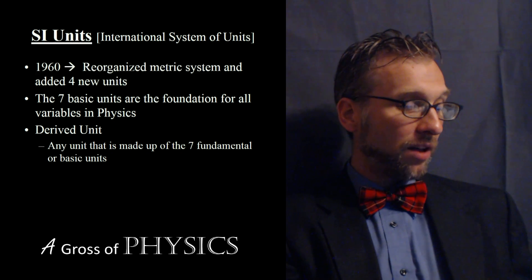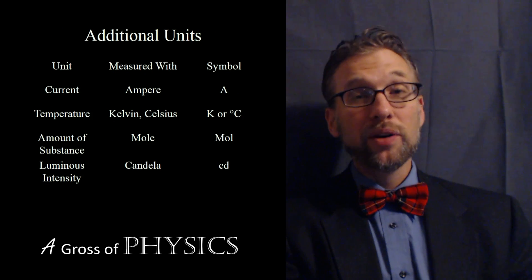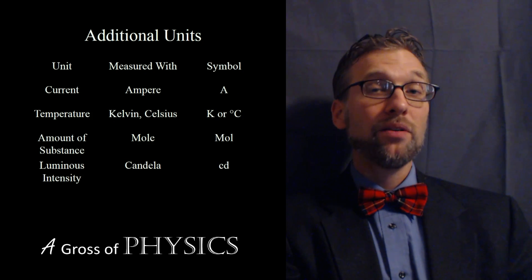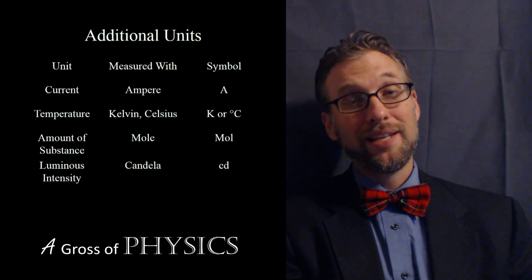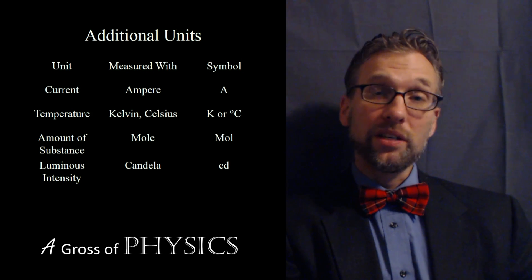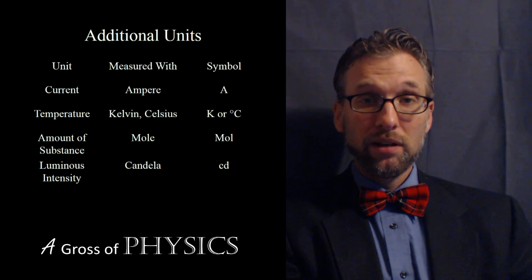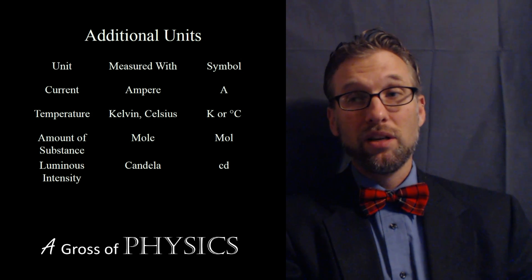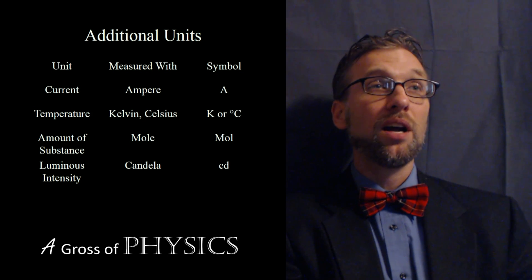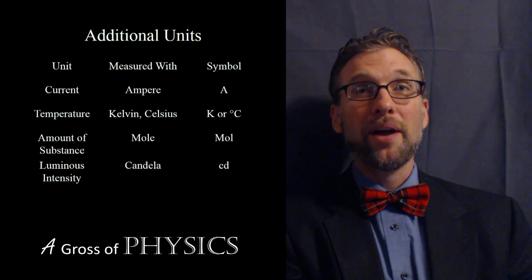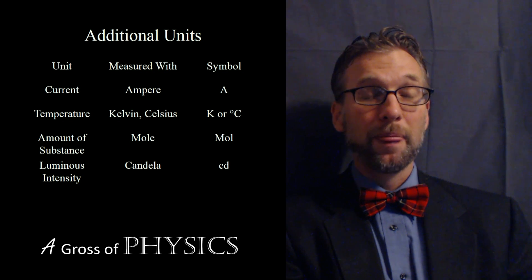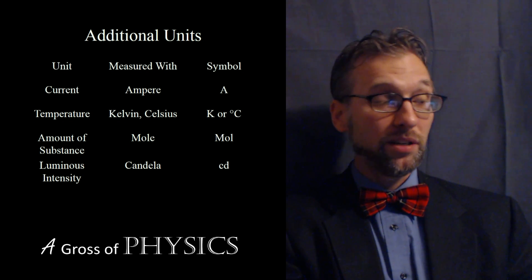Now the four new values are current, temperature, amount of substance, and luminous intensity. Now current is an electrical unit. It measures the ampere, which is the unit for current. It's how much electrons flow, how many electrons flow past a given point in a given amount of time. It will be useful when we talk about electricity.